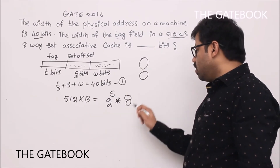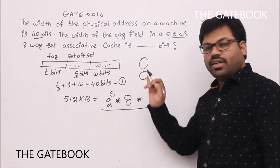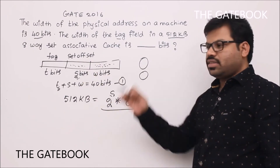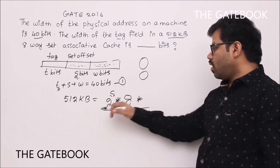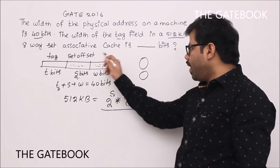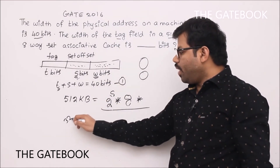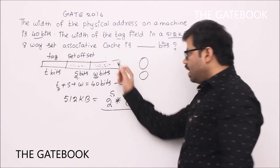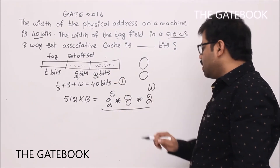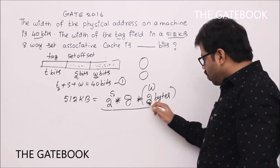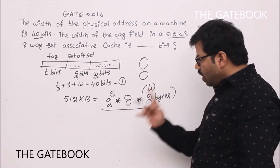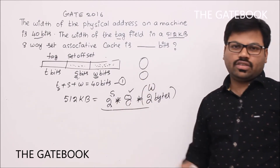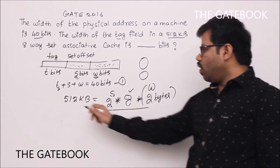Since it is 8-way set associative, each set has 8 blocks. So total number of cache blocks = 2^s × 8. Each block has 2^w bytes (since w is the byte offset). Therefore, total cache size = 2^s × 8 × 2^w bytes = 512 KB.